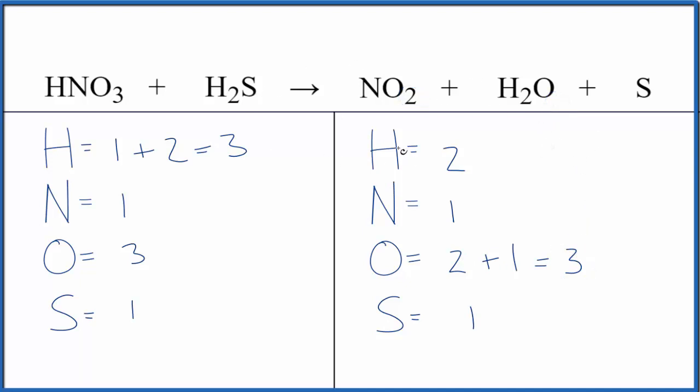So everything looks good except the hydrogens. We have three hydrogens in the reactants, two in the products.